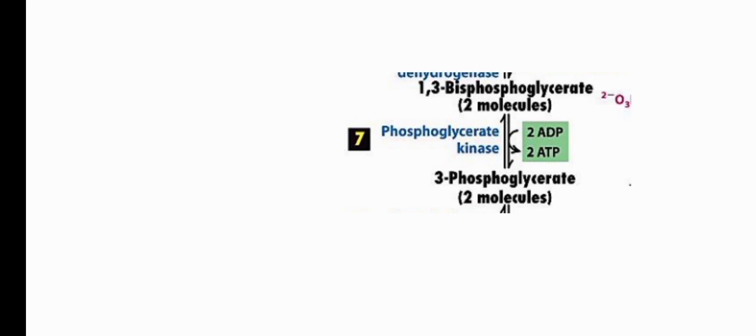Step 7: The two molecules of 1,3-bisphosphoglycerate are converted into two molecules of 3-phosphoglycerate by the enzyme phosphoglycerate kinase. This is the first ATP-generating step — two ATPs are produced, one from each 1,3-bisphosphoglycerate molecule. Since there are two molecules at this stage, we gain two ATPs here.